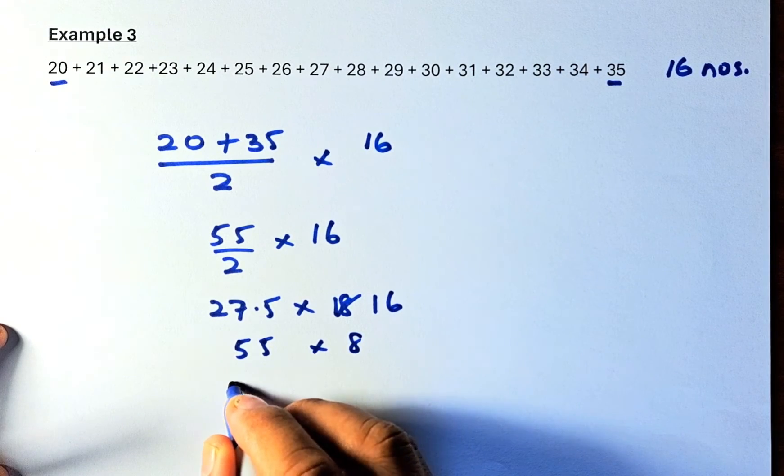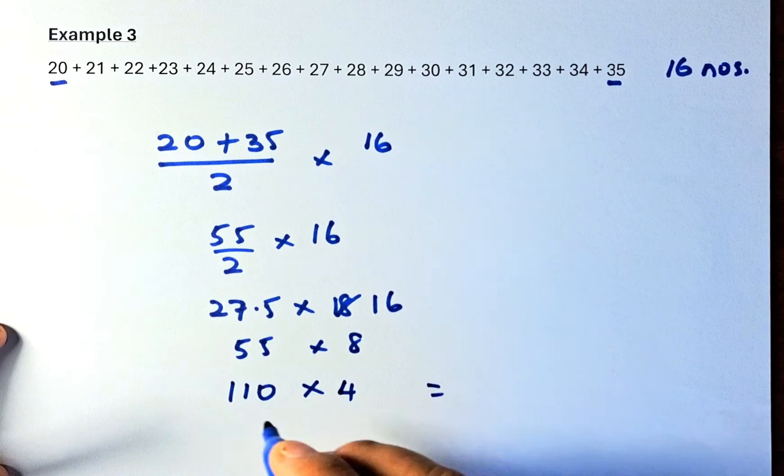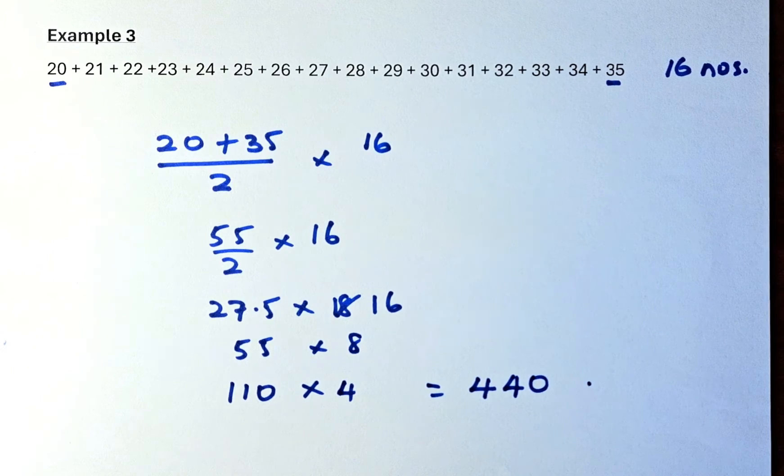So 55, double is going to be 110, half of 8 is going to be 4. Now you can see 110 times 4 is 440. So that is the shortcut way or the secret trick for you to add consecutive numbers in this video.